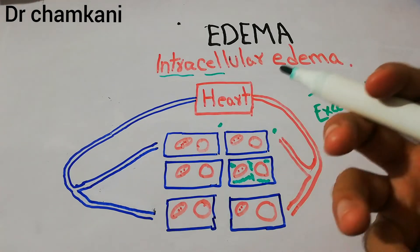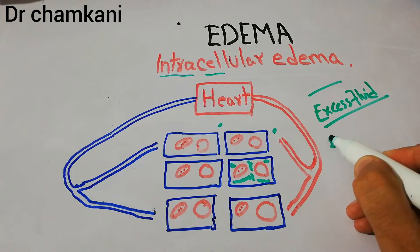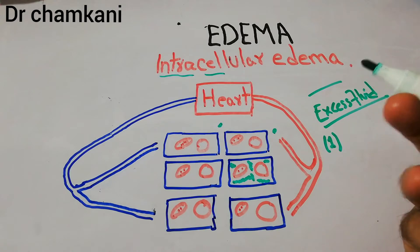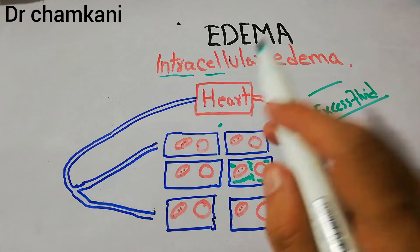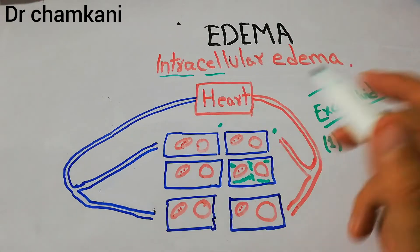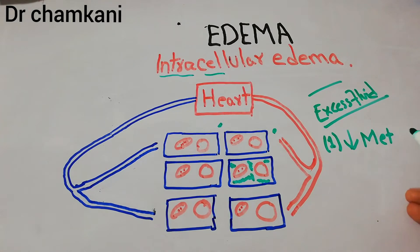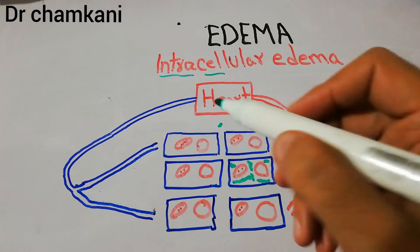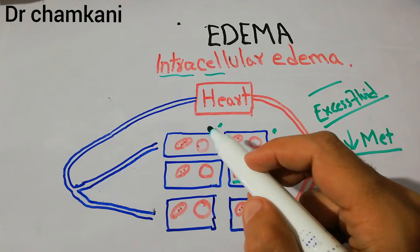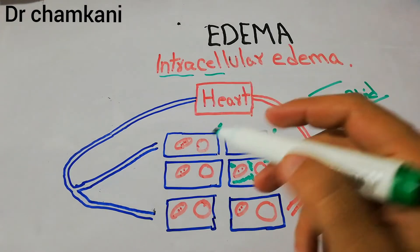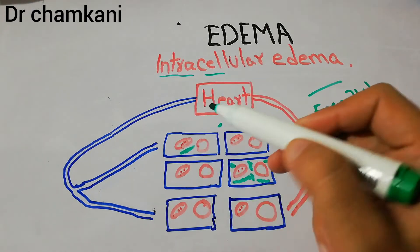Now, how does collection of excess fluid inside the cells occur? There are basically two main causes of intracellular edema. The first cause is depressed metabolic activities of the cells. Every cell has metabolic activities going on in its organelles — for example, mitochondria, the powerhouse of the cell, where ATP is generated.